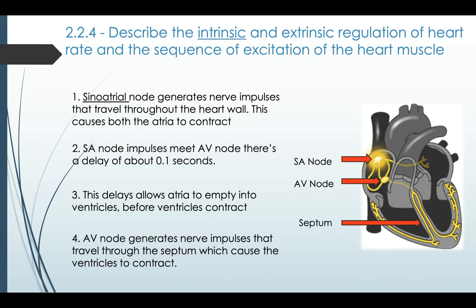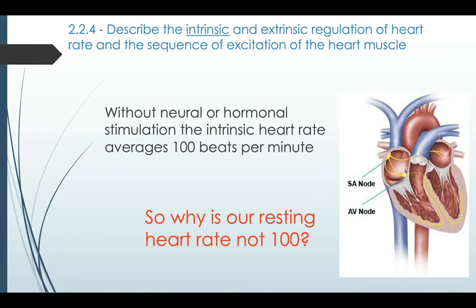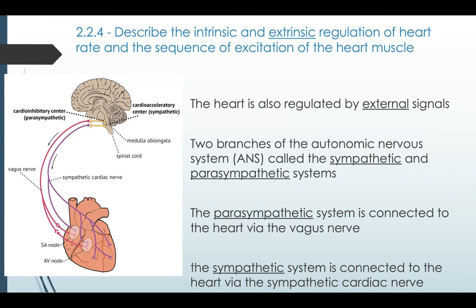The AV node then generates nerve impulses that travel through the septum and cause the ventricles to contract, pushing blood out of the heart to the lungs and to the body. Without neural or hormonal stimulation, the intrinsic heart rate averages 100 beats per minute. But that raises the question: why is our resting heart rate not 100 beats per minute for everyone, and why do we have different resting heart rates?